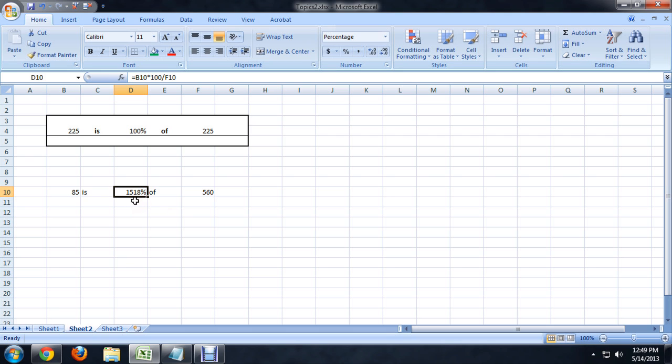Unfortunately, it misread the decimal place, and obviously 85 is not a thousand percent of 560. To get this to look right, we're actually going to go back to the formula and divide the total by 100, just to move that decimal place to where we need it to be.